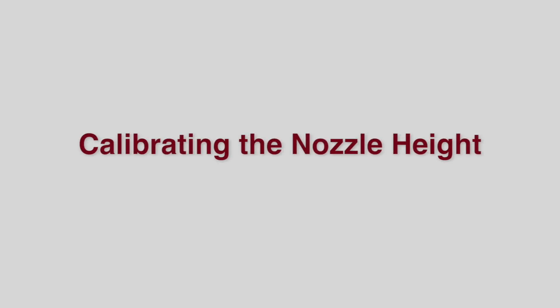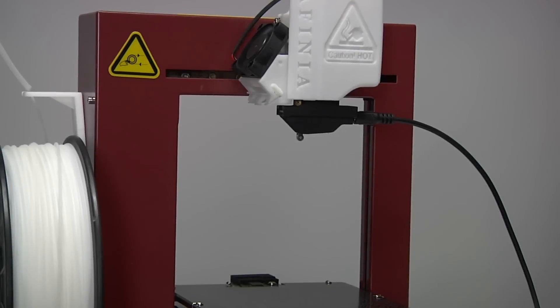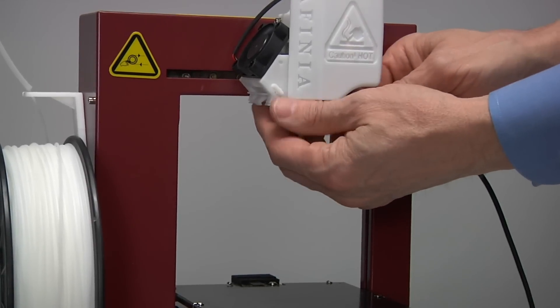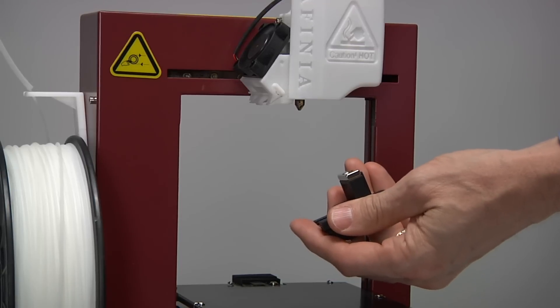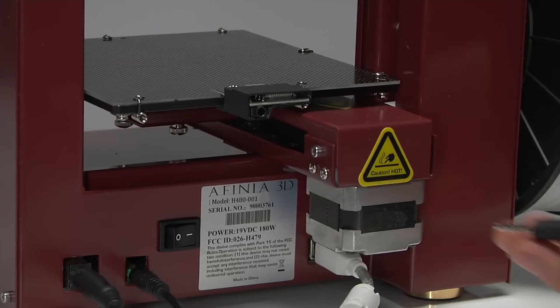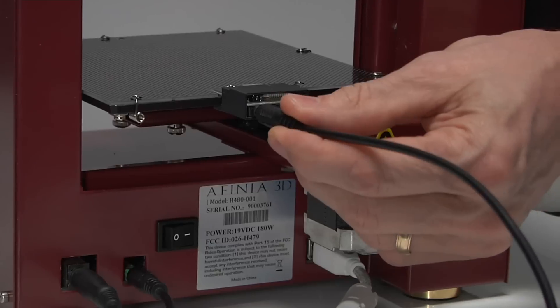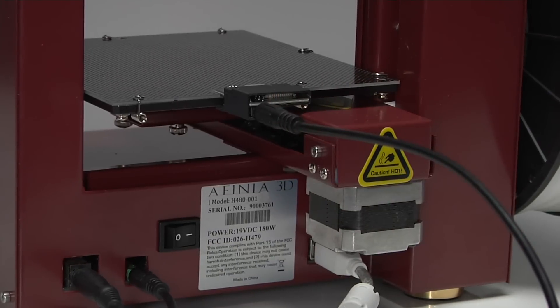Calibrating the nozzle height. The nozzle height must be calibrated prior to printing to ensure it's the correct distance from the platform. Remove the platform calibration probe from the extruder head and disconnect the data cable from the probe. Plug the data cable into the connection on the back of the nozzle probe positioned at the rear of the platform.